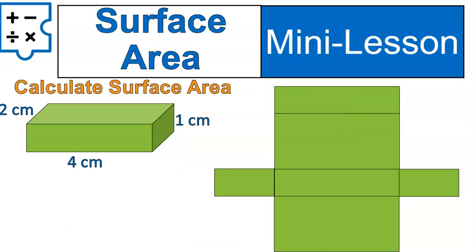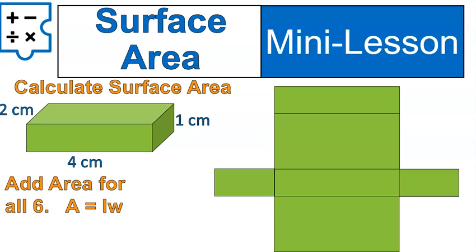Now, if you are asked to calculate the surface area, what you can do — and this is a perfectly legitimate way to do it — is add up the areas of all of these rectangles. First, you'd have to calculate the area for all of the rectangles, and then add them all up. So let's label the lengths we have here: two centimeters, one centimeter, and four centimeters. We can calculate, using those numbers, the area of all six rectangles.